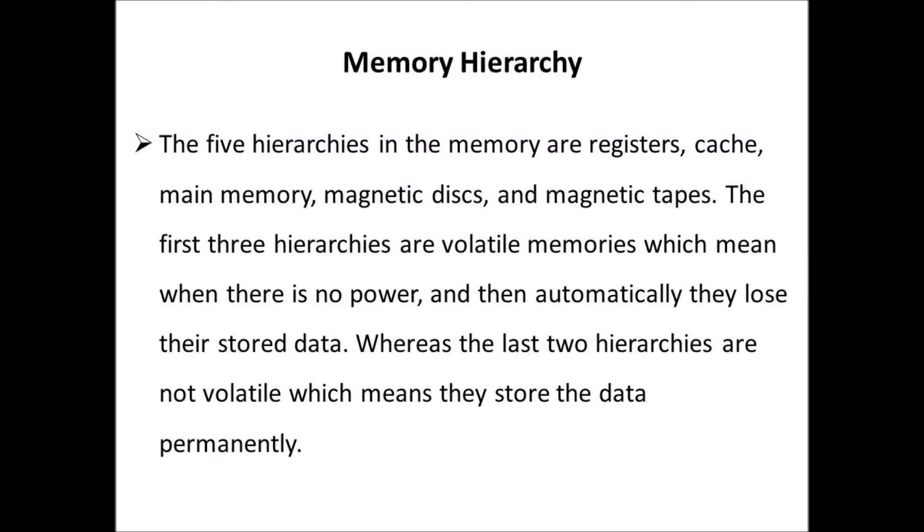The five hierarchies in the memory are registers, cache, main memory, magnetic disk, and magnetic tapes. The first three hierarchies are volatile memories, which means when there is no power they automatically lose their stored data. Whereas the last two hierarchies are non-volatile, which means they store the data permanently.